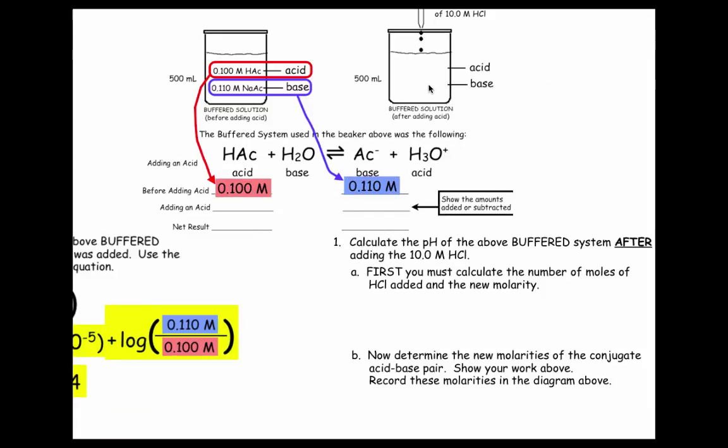First, we have to calculate the number of moles of HCl added and the new molarity, but we're adding the same amount that we added in the non-buffered system, so we don't have to do that. Same as before, 0.020 molar HCl, but the Cl is the spectator, so it's 0.020 molar H+, because HCl is a strong acid. Determine the new molarity of the conjugate acid-base pair.